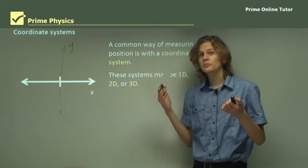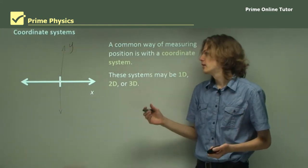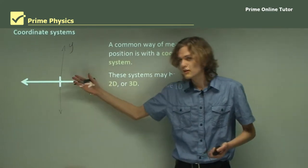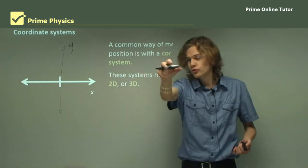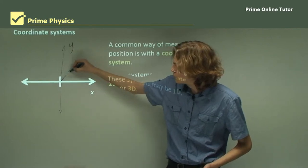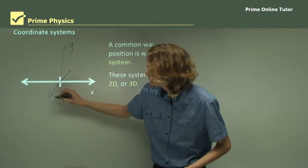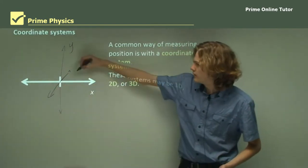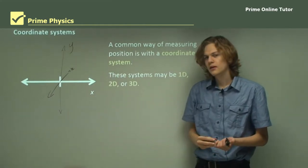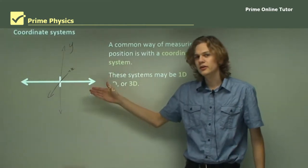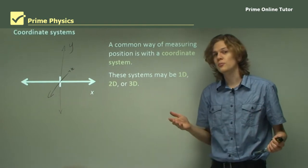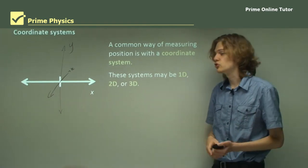If we want to measure in three dimensions, then we need another axis coming towards you and going off the board, and with a bit of foreshadowing it can look something like this — that will be the z-axis. With axes like these we can measure the position of an object in three different dimensions rather than just one.